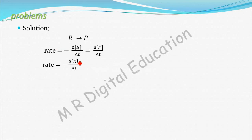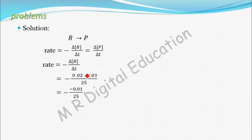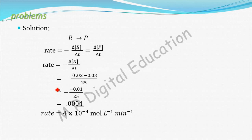I have taken these two terms. Change in concentration is final concentration minus initial concentration. He has given 0.02 minus 0.03, divided by time taken of 25 minutes. So 0.02 minus 0.03 is minus 0.01, divided by 25. The minus sign from the formula and the minus from the calculation cancel to give a positive value. So the rate is 0.0004, which is 4 × 10⁻⁴ mol per liter per minute.